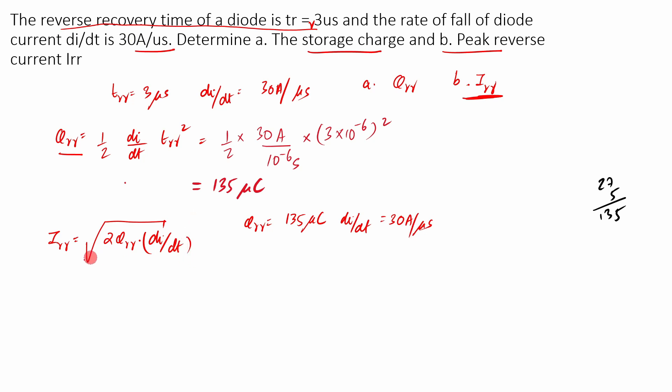So we will put that here, so it will be root of 2 into QRR is how much? 135 microcoulombs. So you can convert microcoulombs multiplied by 30A per microsecond, ampere per microsecond. So in SI units, IRR you want to find it in amperes. So we will do a conversion, we will convert all the micro values into its SI units. So first microcoulombs will convert it into coulombs.